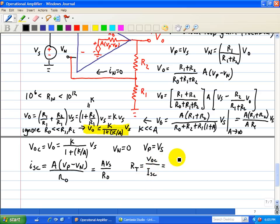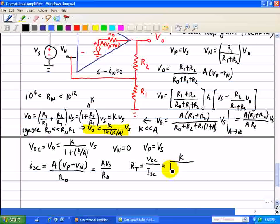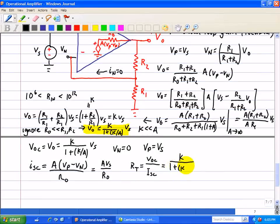And in this case, we have K in the numerator, 1 plus K, all this divided by A. We take this quantity and make that the numerator since that's VOC. And the short circuit is A VS divided by RO. And we need to put VS here also in the numerator.